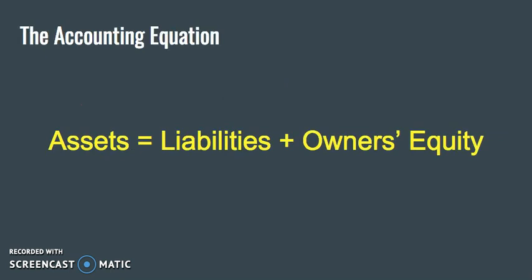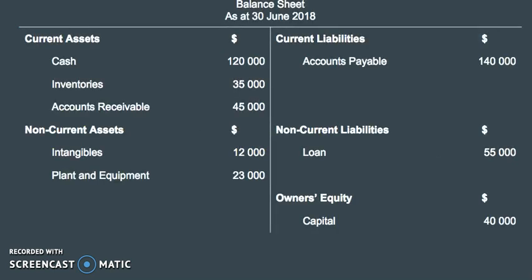We've got what's called the accounting equation. It's called a balance sheet because it needs to balance. So the accounting equation is: assets has to equal liabilities plus owner's equity. So if there's $100,000 worth of assets, there needs to be combined between liabilities and owner's equity $100,000 as well. It has to balance, hence the name balance sheet.